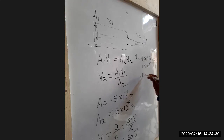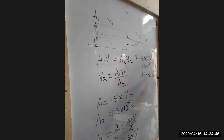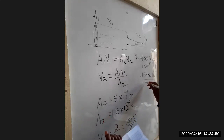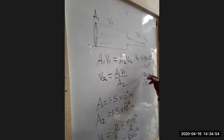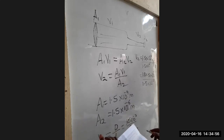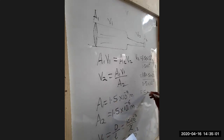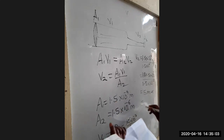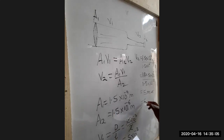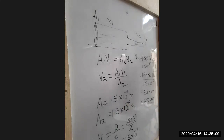1.5 times 5 — you add the powers from the law of indices — that is going to be 10 raised to negative 6 over 1.5 times 10 raised to negative 6. These two will cancel and we will remain with 5 meters per second, or in terms of centimeters that is going to be 500 centimeters per second. So that was what was expected of you.